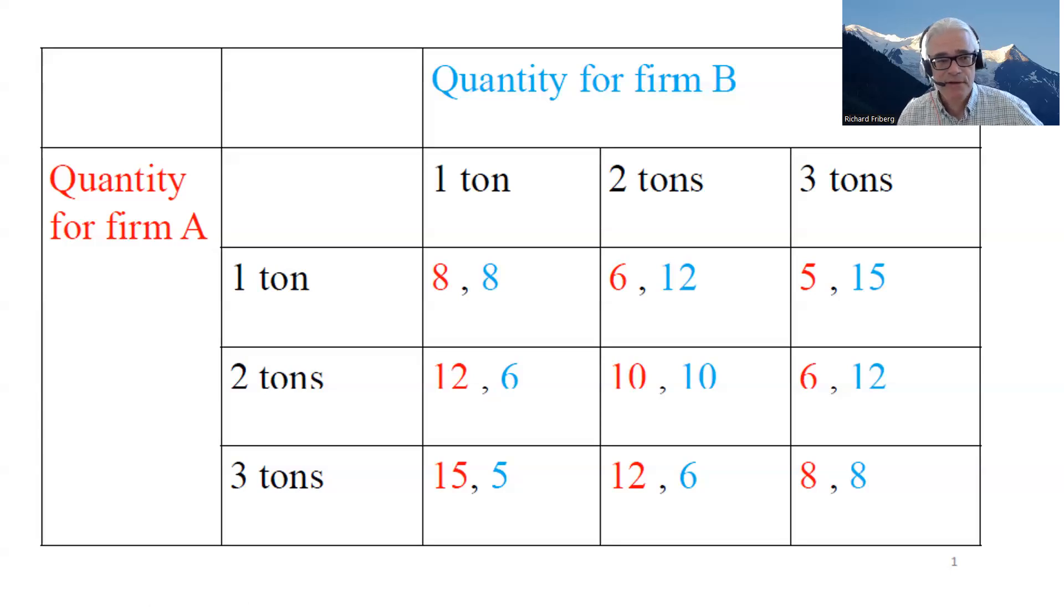So put ourselves in the shoes of firm A first. If it believes that firm B is producing two tons, what's its best response to that? Well, that's 12, marking the optimal choice there. If we're looking at firm B, in contrast, if it believes that firm A is producing two tons, what's its best response? Well, the best response of firm B then would be 12, comparing the payoffs 12, 10, and 6.